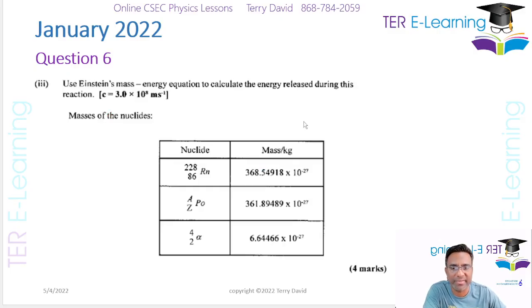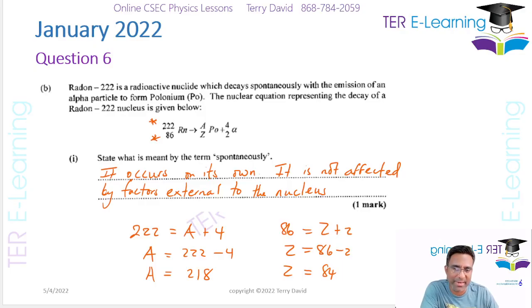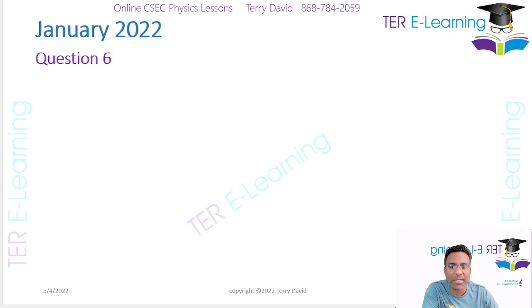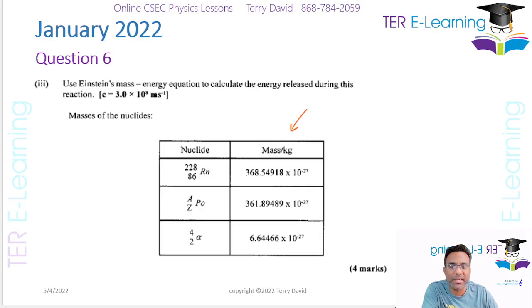The next part, we have some mass information here and they've given us the mass in kilograms, and they want us to figure out what is the energy released in this reaction. So this is a nuclear reaction here and what we need to do is to find our mass defect. So you add up all the masses on the left, add up all the masses on the right, and when you subtract that you're going to get your mass defect.